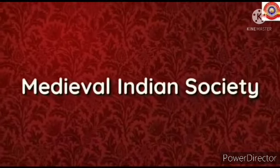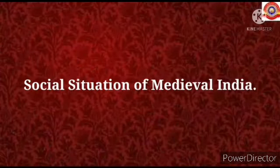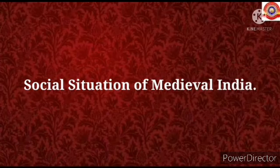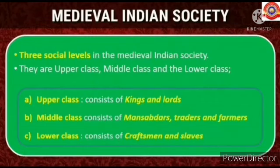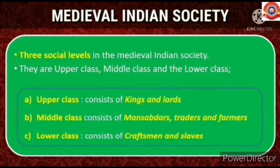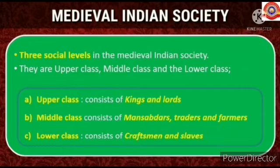Next, let's see medieval Indian society. There are three social levels in medieval Indian society: the upper class, the middle class, and the lower class. The upper class consists of kings and lords. The middle class consists of mansabdars, traders, and farmers. The lower class consists of craftsmen and slaves.